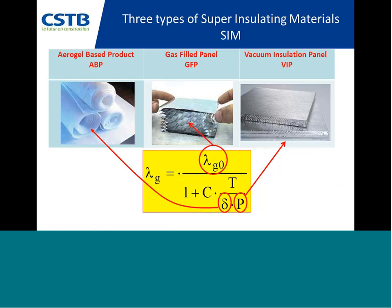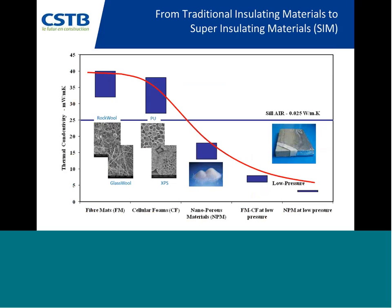Right now on the market there are three types of superinsulating materials using one of the three options: nanoporous materials like aerogel, using the decrease of cavity size; vacuum insulation panels (VIP), using the decrease of pressure; and gas-filled panels, which are not widely used — these are like a cellular structure using another gas than air, similar to double glazing with argon or another gas. This slide shows a whole range of available thermal insulating materials.